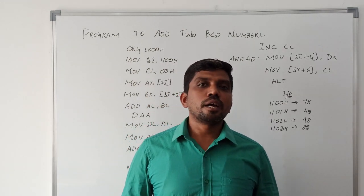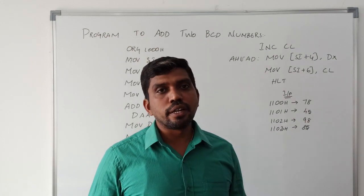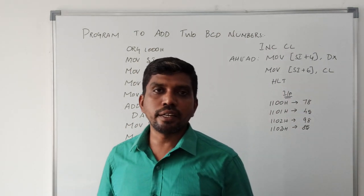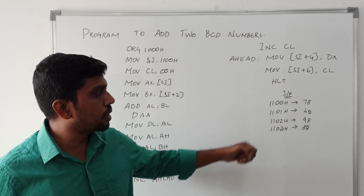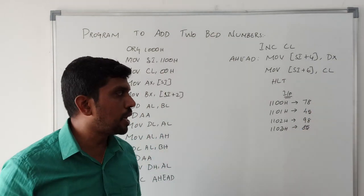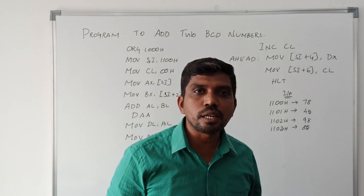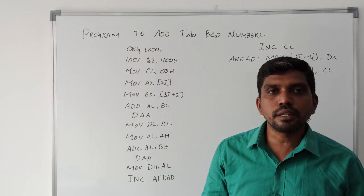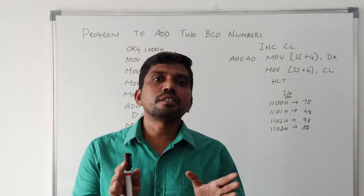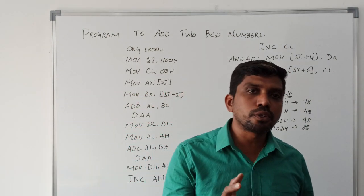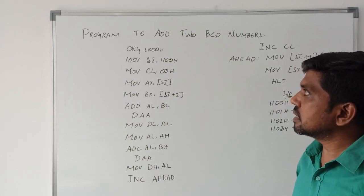Hi guys, welcome to our channel. Today's session I am going to teach about how to add two BCD numbers. This program runs under 8086 microprocessor. I am taking four data values. The first two data are stored in memory locations 2100H and 2101H, representing a 16-bit value. The next two address locations hold the next 16-bit value. After getting the two 16-bit values, you add them and check whether the result is a valid BCD number or invalid. If invalid, you make an arrangement to convert it to a valid BCD number using the instruction DAA.